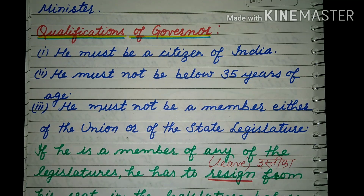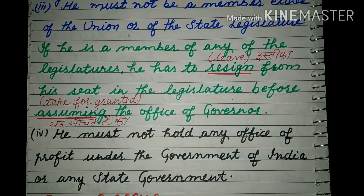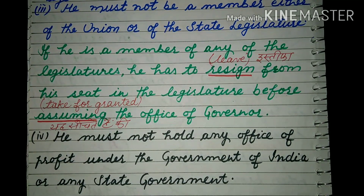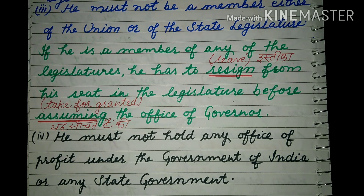कि जो अपनी राज्यविधायिका है और जो union है उसका वो किसी का भी member नहीं होना चाहिए. If he is a member of any of the legislature, he has to resign from his seat in the legislature before assuming the office of Governor. अगर वो किसी भी legislature का सदस्य है तो उसको resign — leave, छोड़ना, स्तीफा देना — पड़ेगा अपनी seat से, assuming the office of Governor.